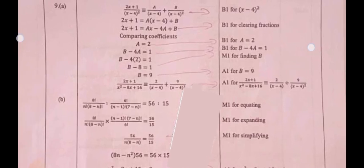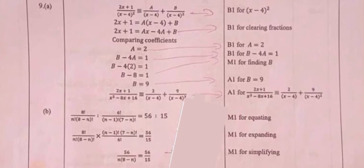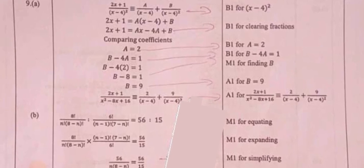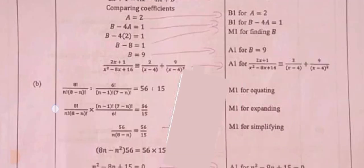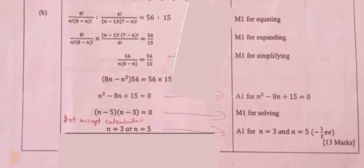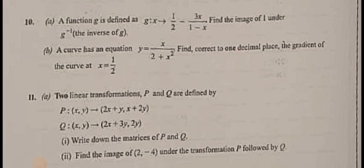Question 10. A function g is defined as g: x arrow 1 over 2 minus 3x over 1 minus x. Find the image of 1 under the inverse of g.